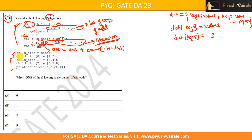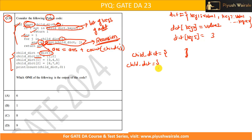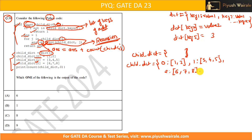Now let us look at this particular line of code. What we are doing here — child_dictionary equals to dict(). So this is a function dict(). We have defined one variable child_dictionary as an empty dictionary as of now. Now we are adding the key-value pairs. For key 0, the value is the list [1, 2]. For key 1, the corresponding values are the list [3, 4, 5]. Similarly for key 2, we are adding the corresponding values — that is basically the list [6, 7, 8]. So this is what the dictionary looks like. We have executed this particular line of code.